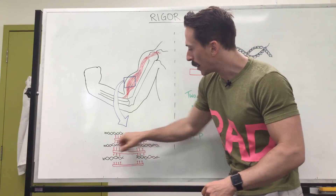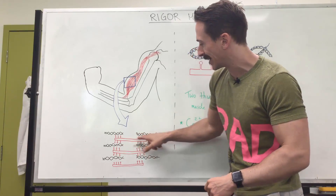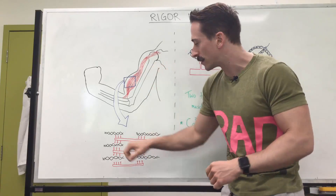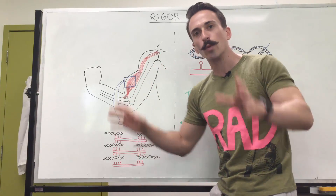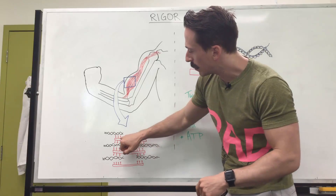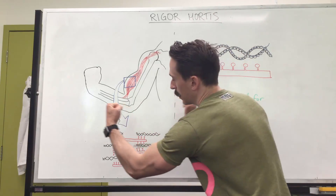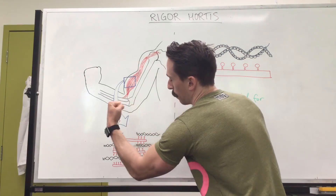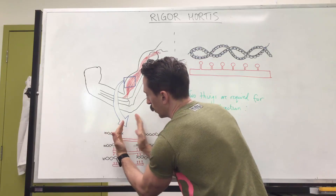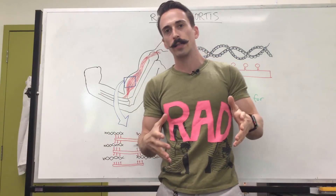The myosin filaments have these little golf club-looking things sticking off the ends with heads on them. What basically happens is when you want to contract a muscle, the heads of the myosin bind to the actin, and when they bind in they contract and pull these filaments inwards — that's how the muscle fiber contracts.